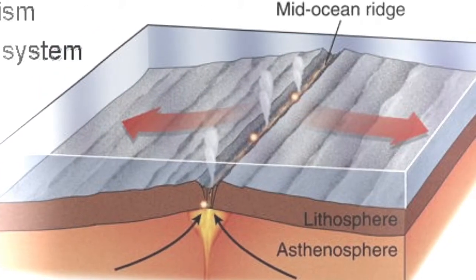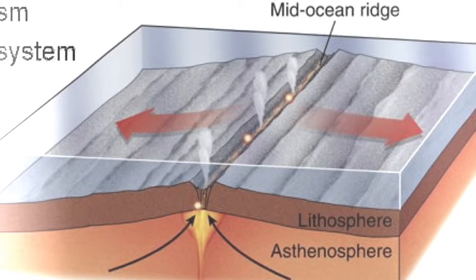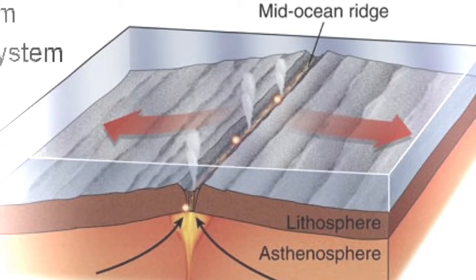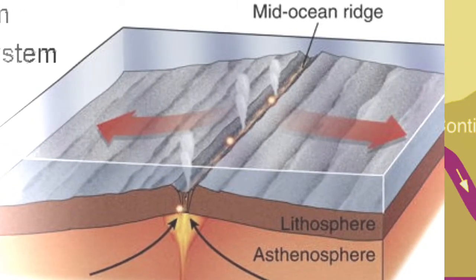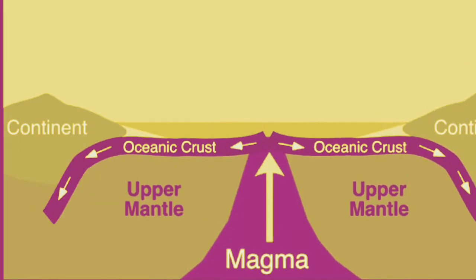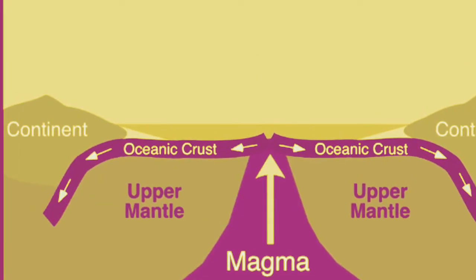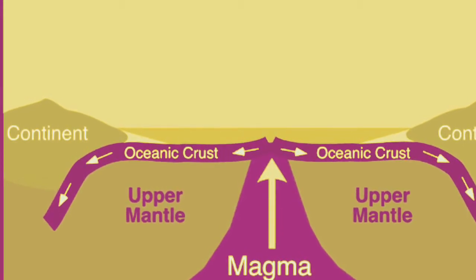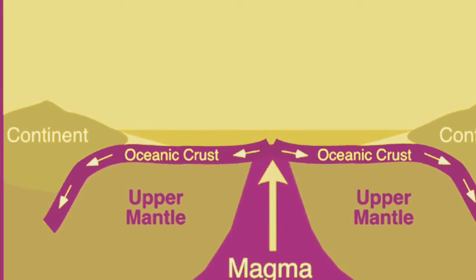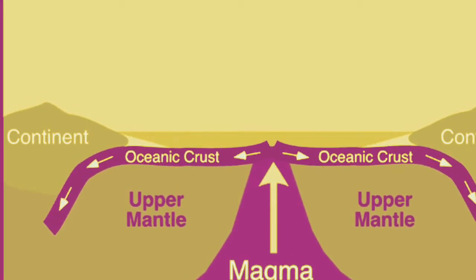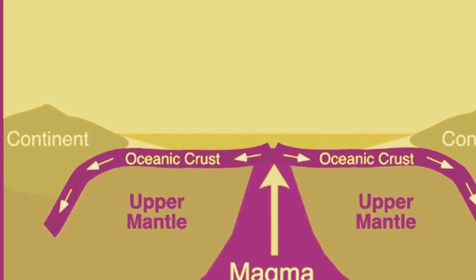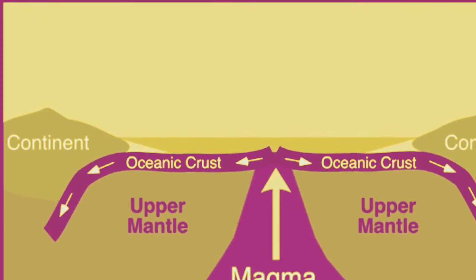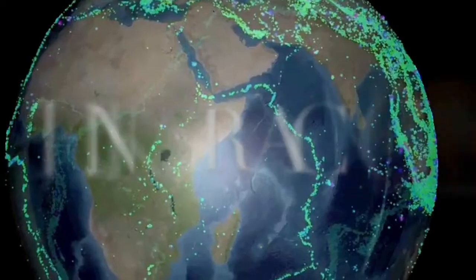Divergent boundaries in the oceans form ocean ridges. On continents, they form rift valleys. In summary, when tectonic plates move away from each other, they create divergent boundaries. Divergent boundaries form oceanic ridges and rift valleys. Thank you.